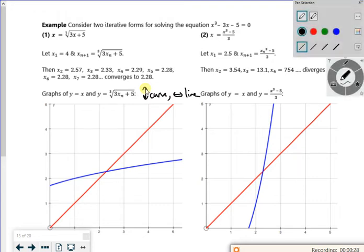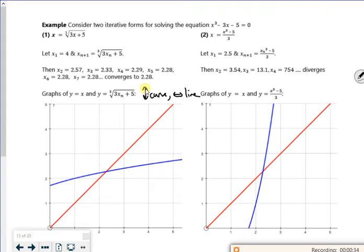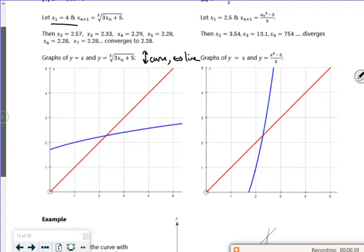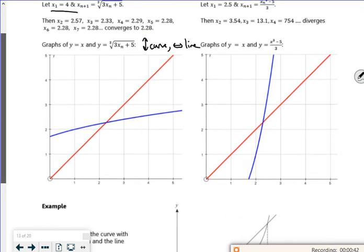That looks really thick. So it says x1 is 4. So we'll start at 4, we'll go up to the curve and then across to the line. And then it's up or down to the curve, then across to the line. Up or down to the curve, across to the line. And see how that's going like a set of steps? So that's a staircase diagram, that one.